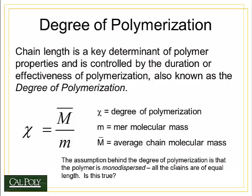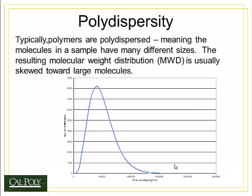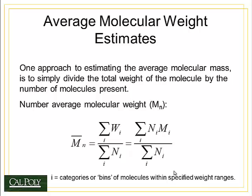The assumption behind the degree of polymerization is that the polymer is monodispersed, meaning all chains have exactly the same length. But of course this is not true — we can't control chemical reactions for every single chain. Instead we get an average chain length with some distribution about that length. Most polymers are polydispersed, meaning the sample has molecules that are both very small and very large, but most are somewhere in the middle. The molecular weight distribution is usually skewed towards larger molecules, like a bell curve with a small number of very large molecules present.